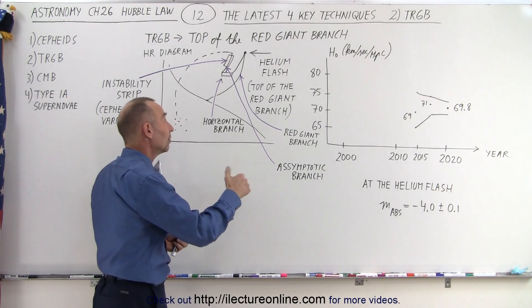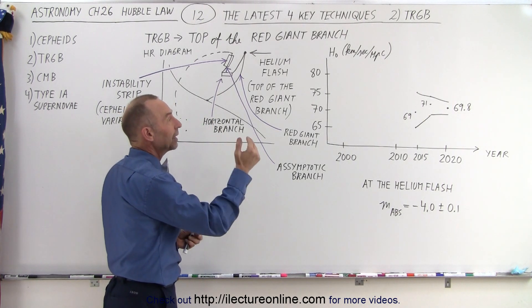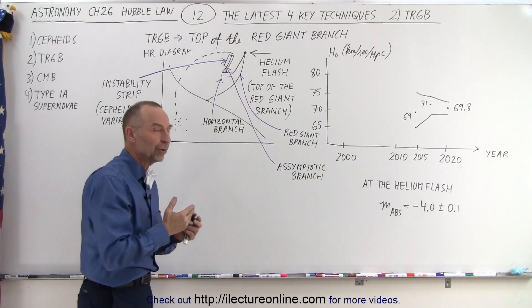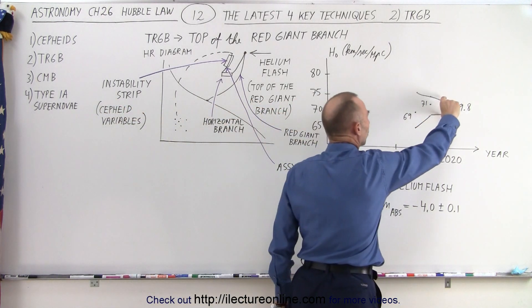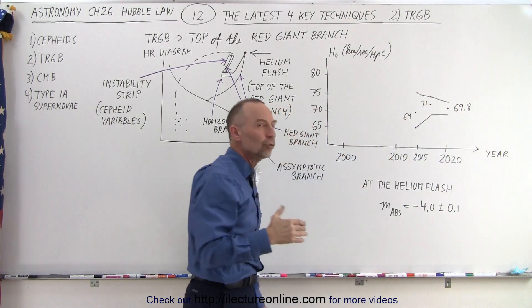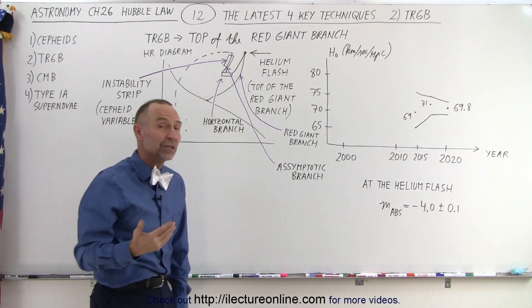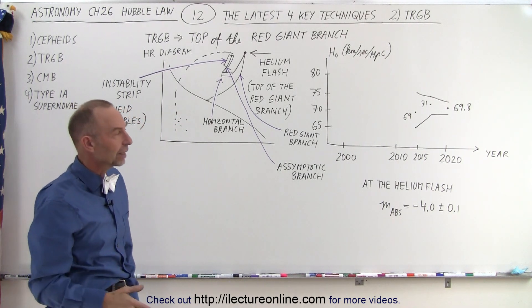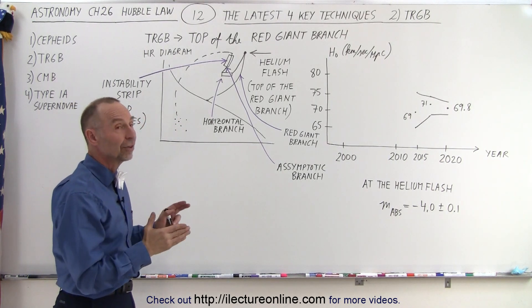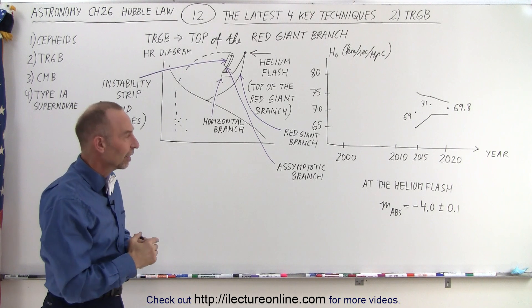So again, the second method does a very good job in mimicking what we're able to do with the Cepheid variables, even though we got a lower number, but a lower number with a smaller range. Now, since this technique is so young, so new, maybe we need a few more years to hammer out all the potential problems and pitfalls that could have come with this method, but at least it's helping us get to a closer value of the Hubble constant.